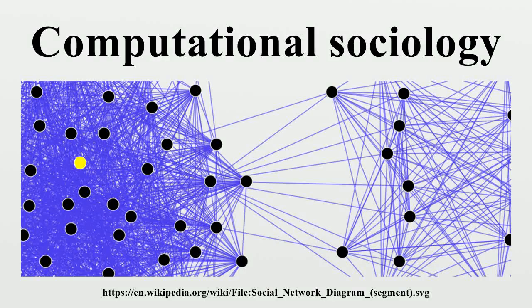Computational sociology is a branch of sociology that uses computationally intensive methods to analyze and model social phenomena, using computer simulations, artificial intelligence, complex statistical methods, and analytic approaches like social network analysis.